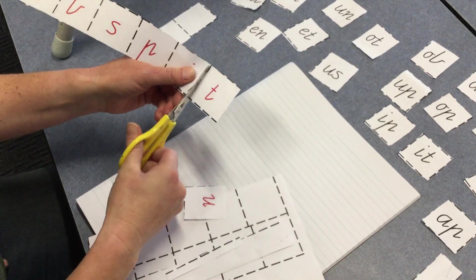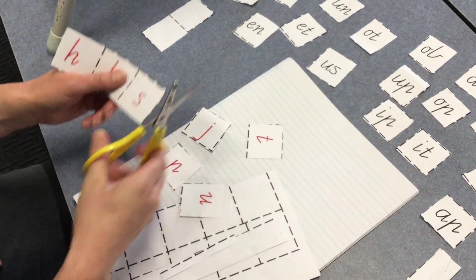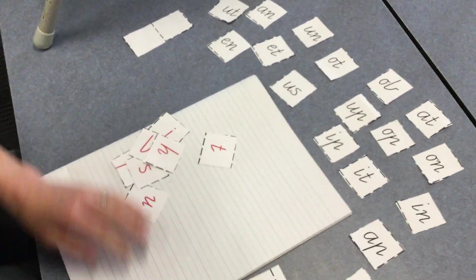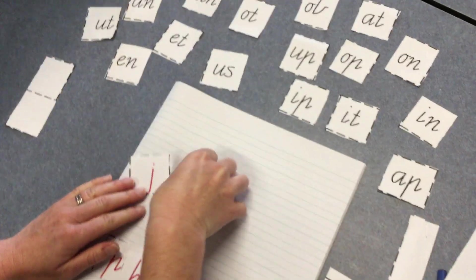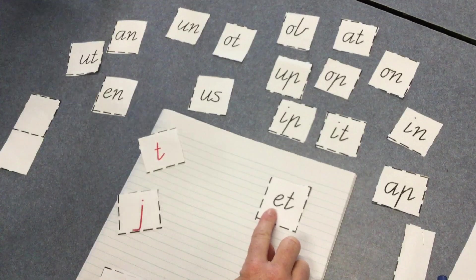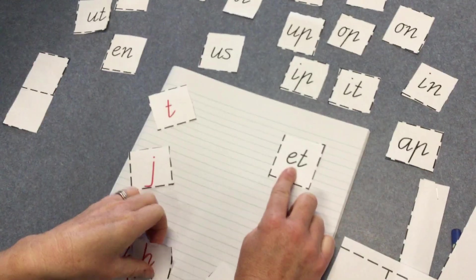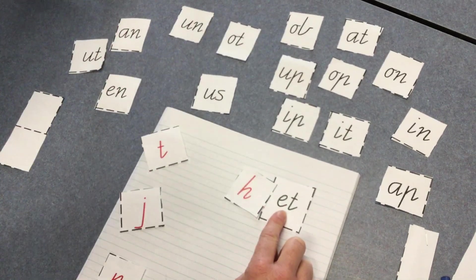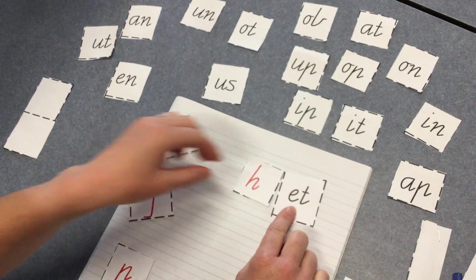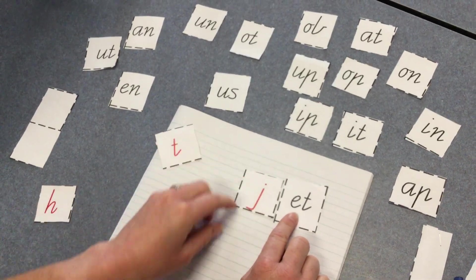Now the trick here, preps, is to really try and work out a real word from these options. So 'e-t, et, et.' I could try and put H here: 'h-et, het, het.' Is that a word? No, that's not a word, so I'm going to pop that back.